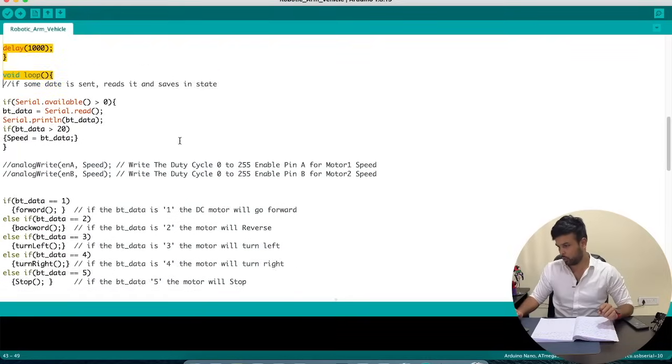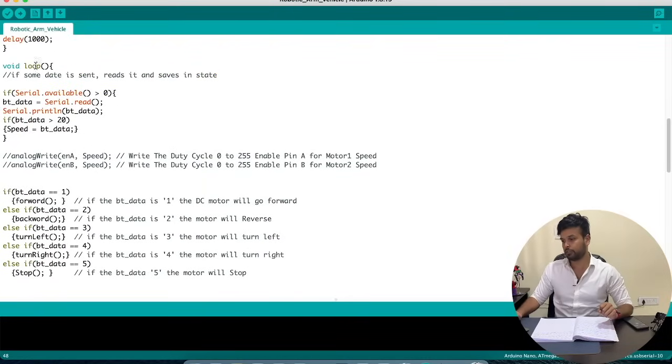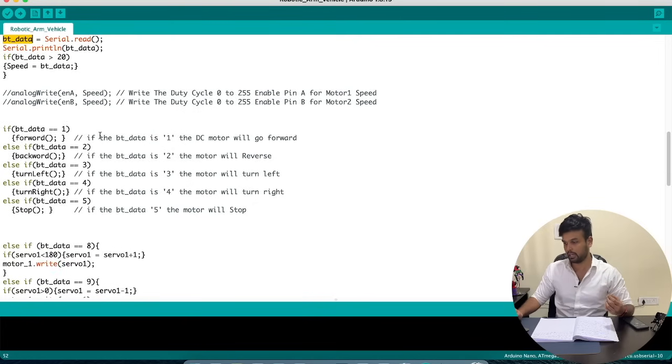And then over here inside our loop function we have a variable called BT data which gets data from the HC-05 from our mobile application. And if this data is one, we'll make our robot to move forward. That is if one, if a particular button is pressed, we'll get one and that will make the robot to move forward. Similarly we have backward, turn left, turn right and stop. We have five such functions being defined.